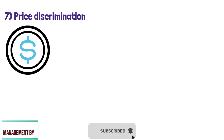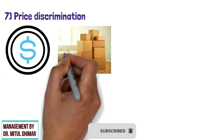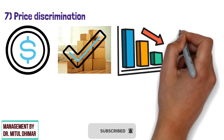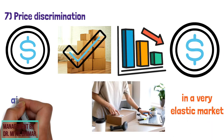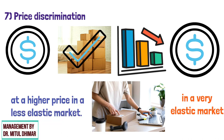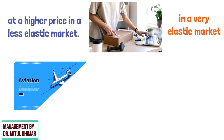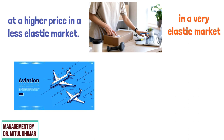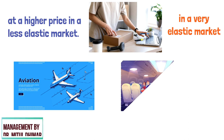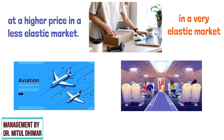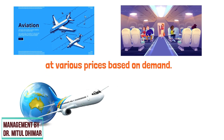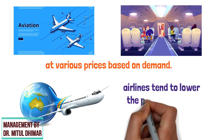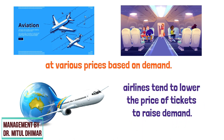Price Discrimination: a monopolist can change the price or quantity of the product. They sell higher quantities at a lower price in a very elastic market and lower quantities at a higher price in a less elastic market. An example of a discriminatory monopoly is an airline monopoly. Airlines frequently sell various seats at various prices based on demand. When a new flight is scheduled, airlines tend to lower the price of tickets to raise demand.